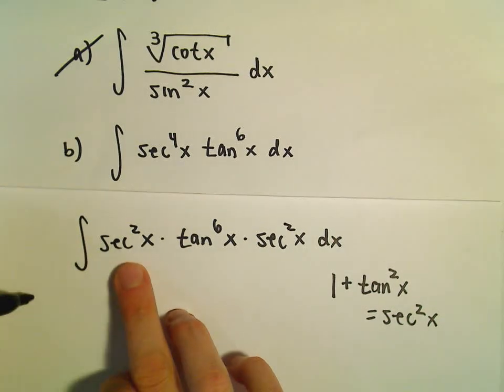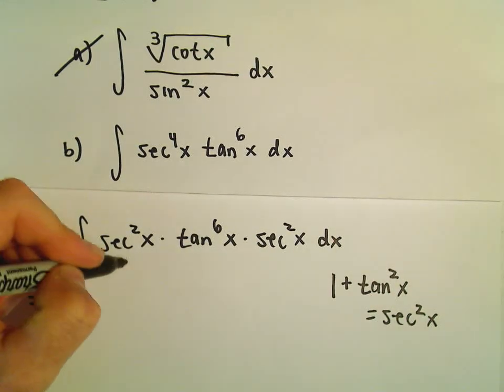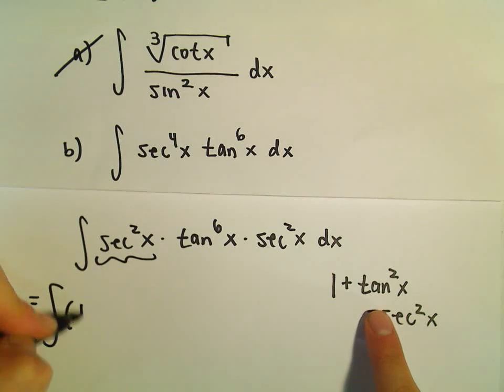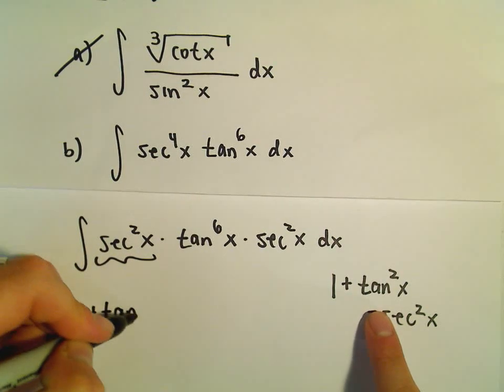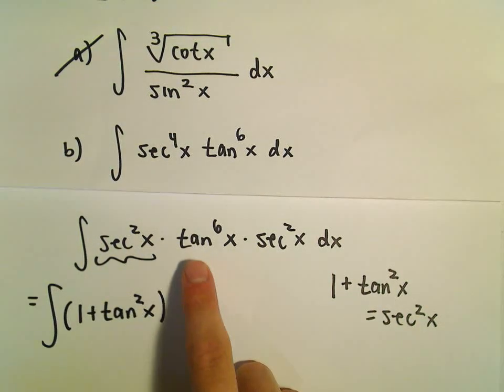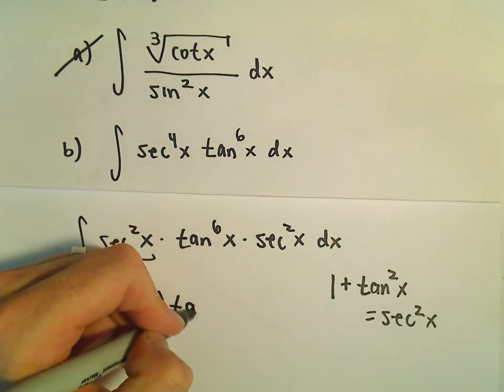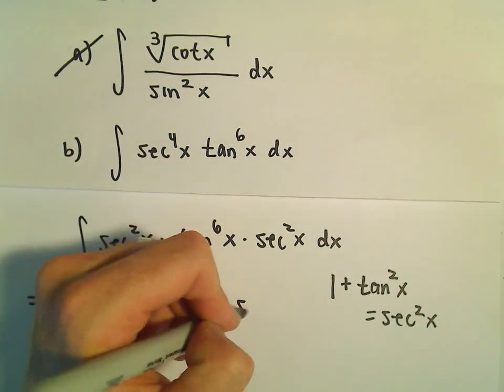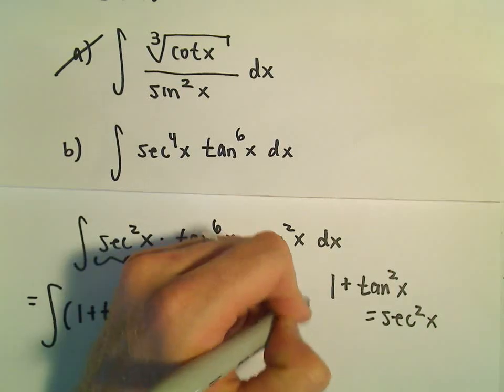So we're just going to replace our secant squared with 1 plus tangent squared. Okay, we'll still leave our tangent to the sixth alone and our secant squared alone.